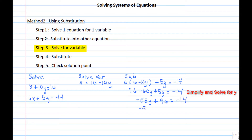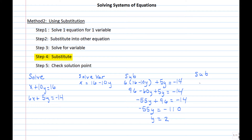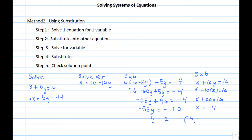Dividing by negative 55 gives y equals positive 2. Back-substituting y equals 2 into the first equation: x plus 10(2) equals 16, so x plus 20 equals 16, and subtracting 20 from both sides gives x equals negative 4. The solution is the point (negative 4, 2).